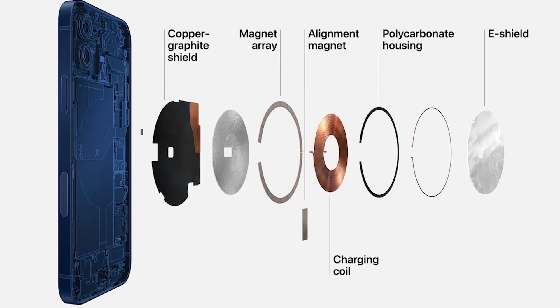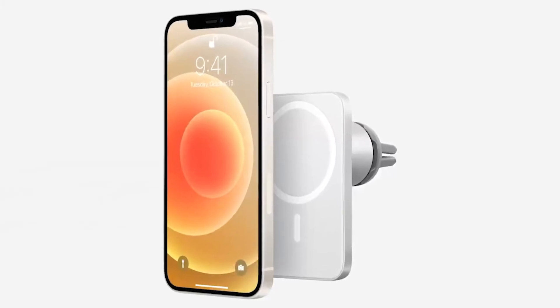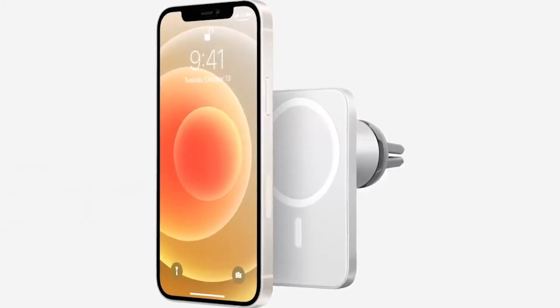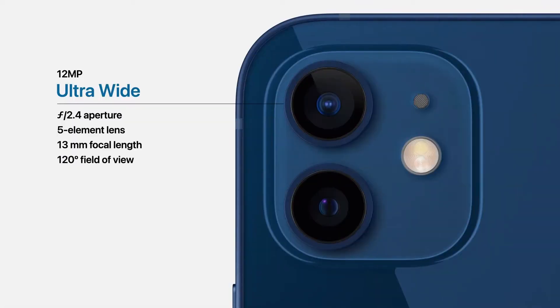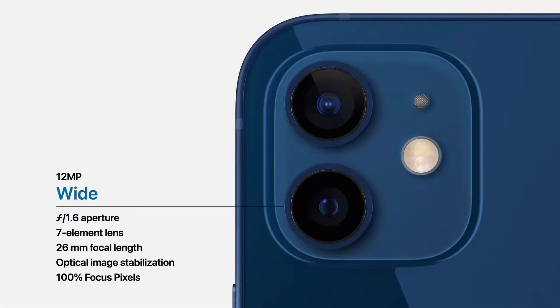The next feature is MagSafe. Basically, there is a magnet built into the iPhone 12, enabling many magnetic features — magnetic pouches, magnetic wireless charging, and more. Moving to the camera: there is a dual camera setup in the iPhone 12, with one 12-megapixel 13mm ultra-wide lens and another 12-megapixel 23mm wide lens.